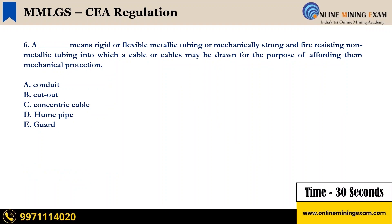A dash means rigid or flexible metallic tubing or mechanically strong and fire resisting non-metallic tubing into which a cable or cables may be drawn for the purpose of affording them mechanical protection. The options are: A) Conduit, B) Cutout, C) Concentric cable, D) Hume pipe, E) Guard. Your time starts now.